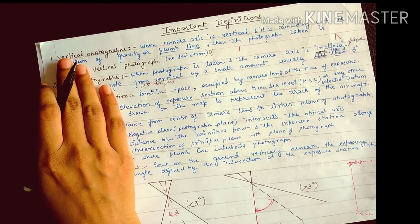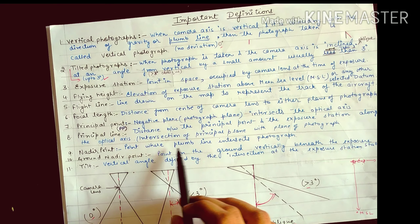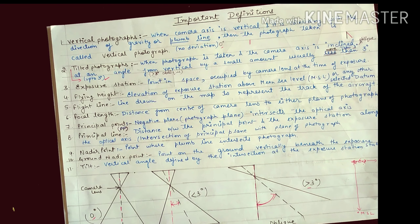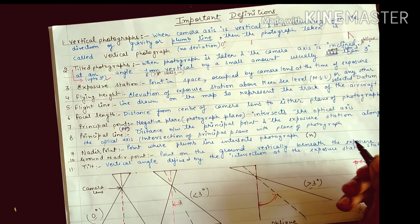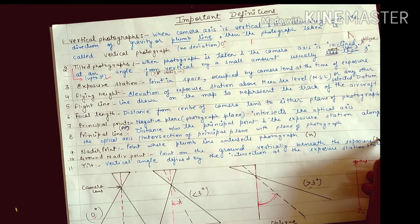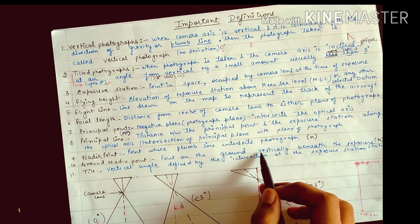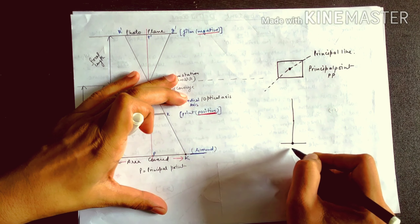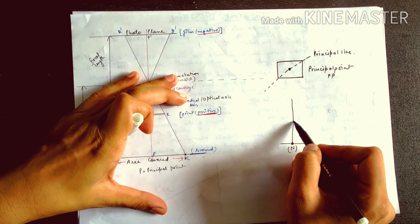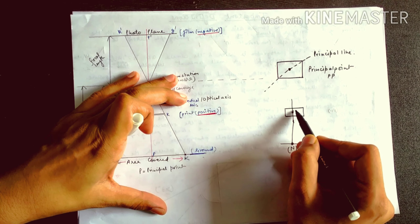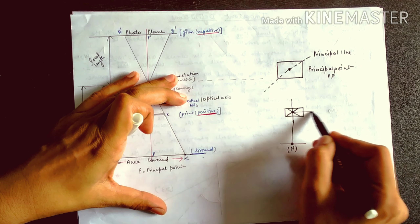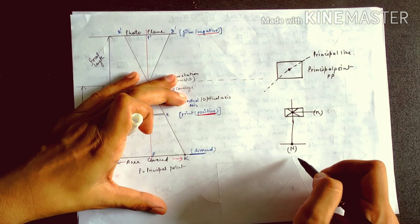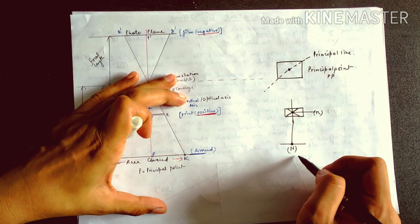Nadir point is the point where the plumb line intersects the photograph. There are two types: ground nadir point (capital N), which is the point on the ground vertically beneath the exposure station where the plumb line touches the ground; and photo nadir point (small n), which is where the plumb line crosses the photograph.